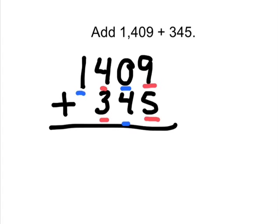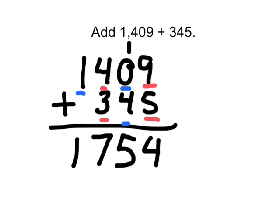Now I go ahead and add and carry when I need to. 9 and 5 is 14, carry the 1, 1 plus 0 plus 4 is 5, 4 plus 3 is 7, and 1. So the answer is 1,754.